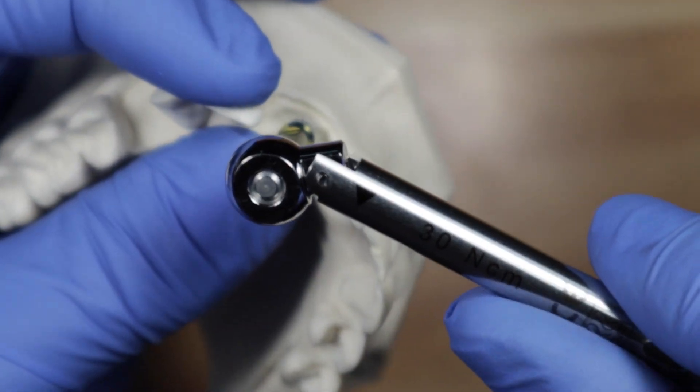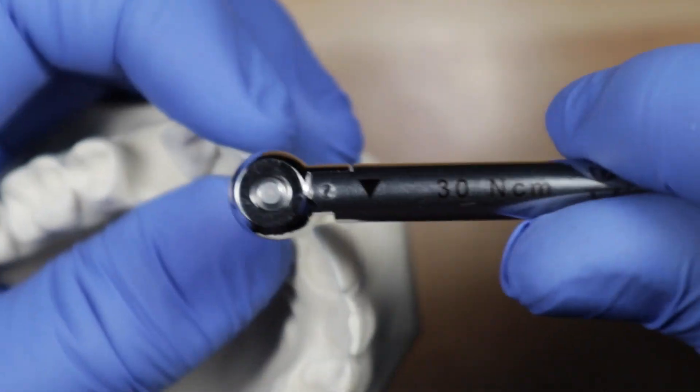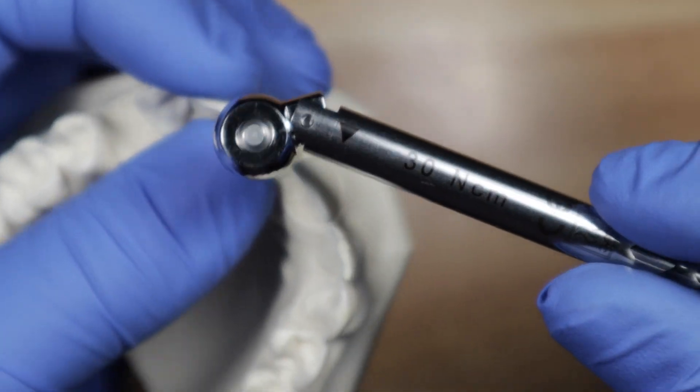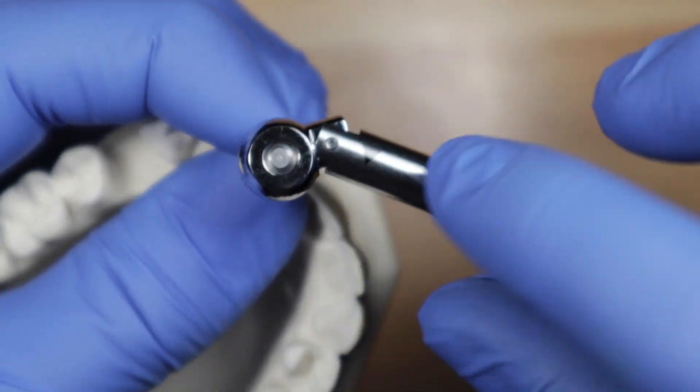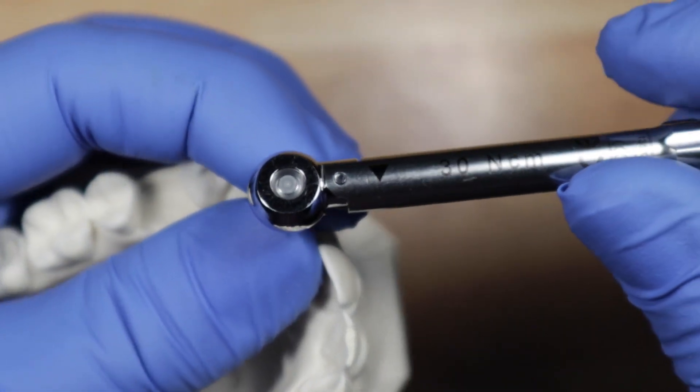So you turn it that way and it breaks, right? It gives, it like kinks right there at 30 newton centimeters. So at 30, it tells you to stop so that way you don't over torque it.